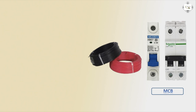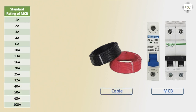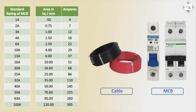The standard rating of MCB for electric wire and cable are: 1, 2, 3, 4, 6, 10, 16, 20, 25, 32, 40, 50, 62, and 100 amperes. Based on our calculation, we select the standard 10 ampere circuit breaker.